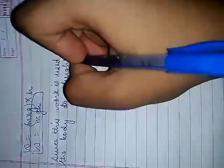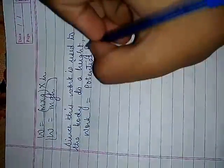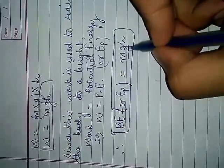Since this work done is stored as potential energy, P.E. or E subscript p, therefore W equals P.E. So potential energy equals mgh. Potential energy is the product of the mass of the body and the gravitation multiplied by the height to which the body is raised.